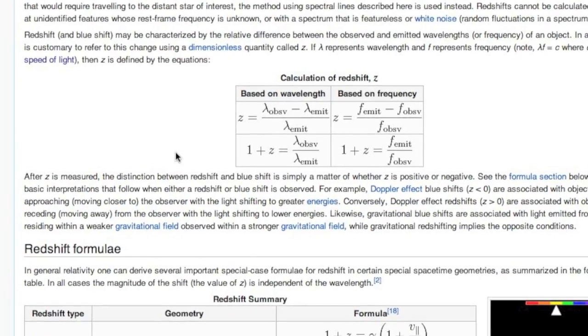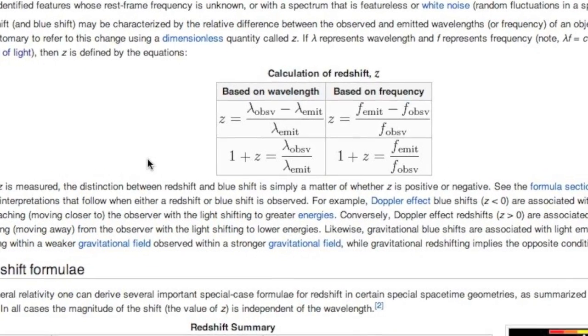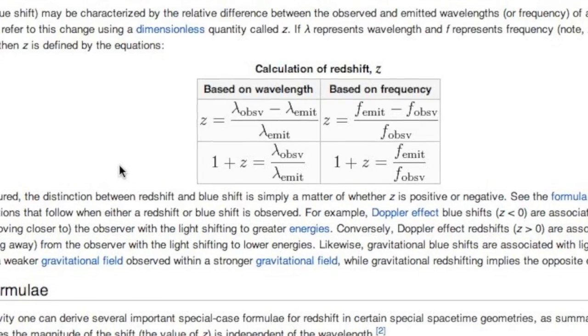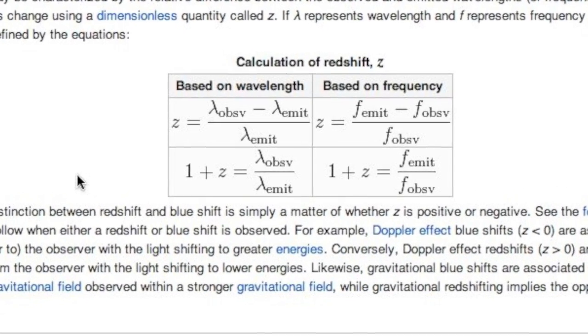There are three ways light from celestial objects can be shifted, and the amount is usually denoted by a dimensionless number, z.